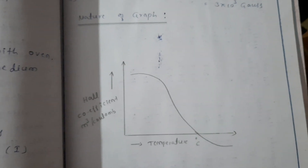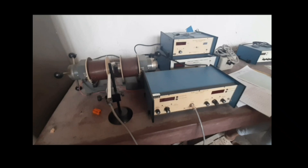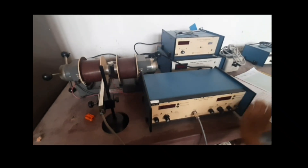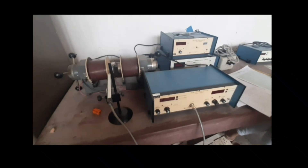The nature of the graph is Hall coefficient versus temperature. To start the experiment, first set up the magnetic field as constant by supplying current to the coils of the electromagnet using a constant power supply. Then, a constant probe current is passed through the sample. Hall voltage is measured by varying the heater current for different temperatures. The corresponding thermo-EMF readings are noted.